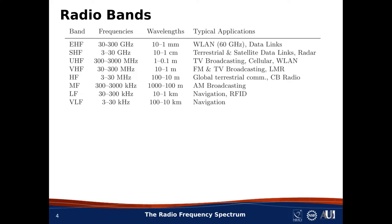Moving down the table, the next band is SHF, which stands for Super High Frequency. These names — EHF, SHF — are subjective and somewhat arbitrary, so don't try to read anything into the words 'extremely high' or 'super high.' As far as we're concerned, these are just names. SHF refers to frequencies from 3 GHz up to 30 GHz, corresponding to wavelengths of 10 cm down to 1 cm. The total bandwidth of the SHF band is 27 GHz — one-tenth the bandwidth available at EHF. Examples of SHF uses include point-to-point data links and a lot of radars.